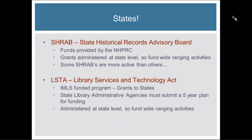Don't forget your state funders. State Historical Records Advisory Boards (SHRABs) are administered at the state level as regrants from the NHPRC. Not every state has a very active and granting SHRAB, so you'll need to look into it — each state determines how those funds are allocated and what projects they're looking for. You might also look at LSTA grants, the Library Services and Technology Act, which are often administered by state library administrative agencies and fund a wide range of activities. Check what your state does with LSTA grants and see if there are programs you might be eligible for.